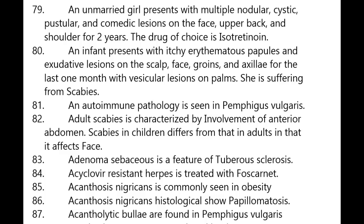An infant presents with itchy erythematous papules and excoriative lesions of the scalp, face, groins, and axilla for one month with vesicular lesions on palms — this is scabies. Autoimmune pathology is seen in pemphigus vulgaris. Adult scabies is characterized by involvement of the anterior abdomen.